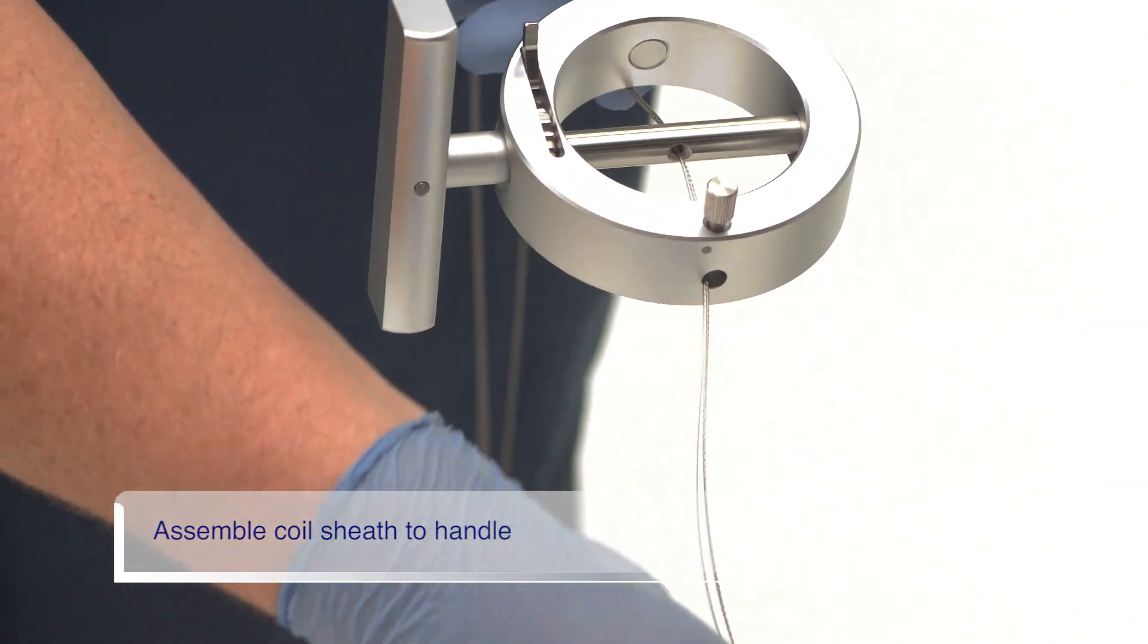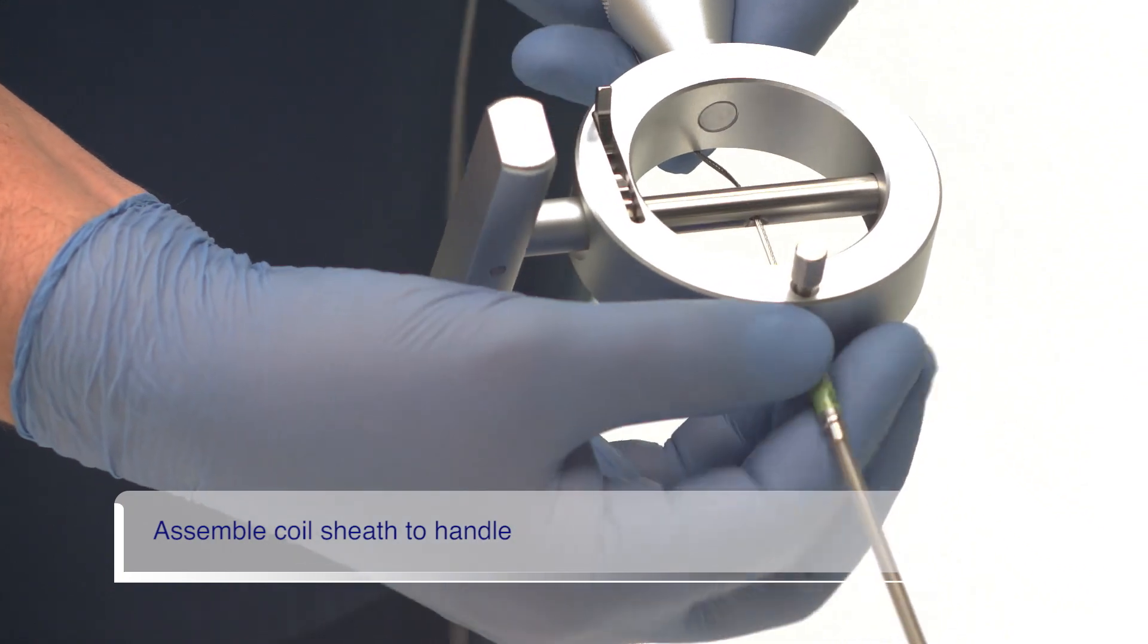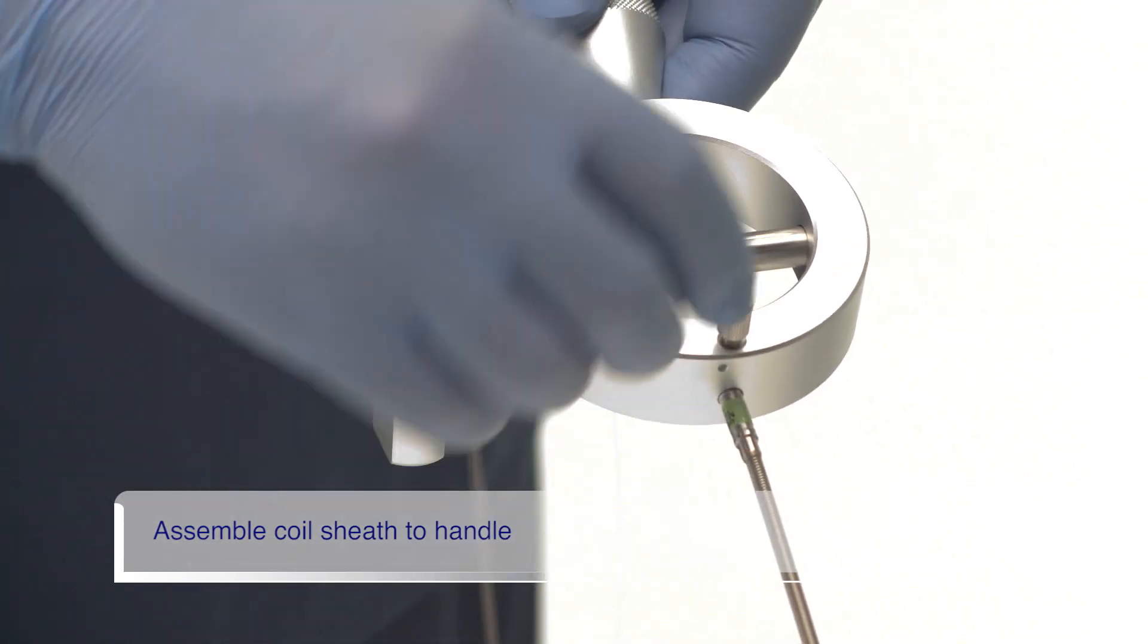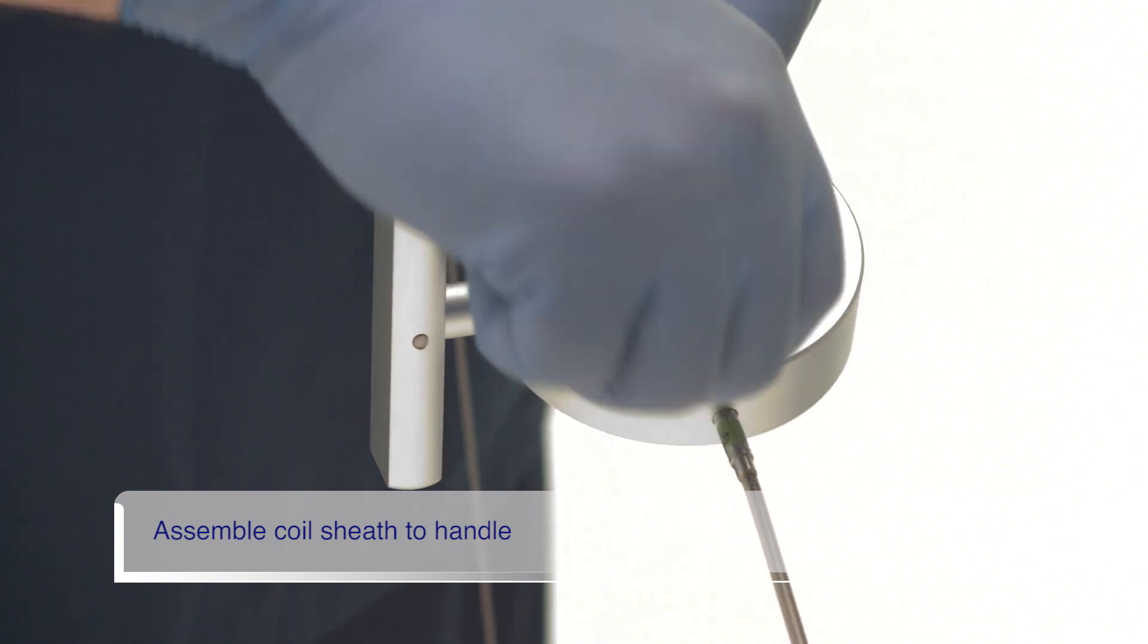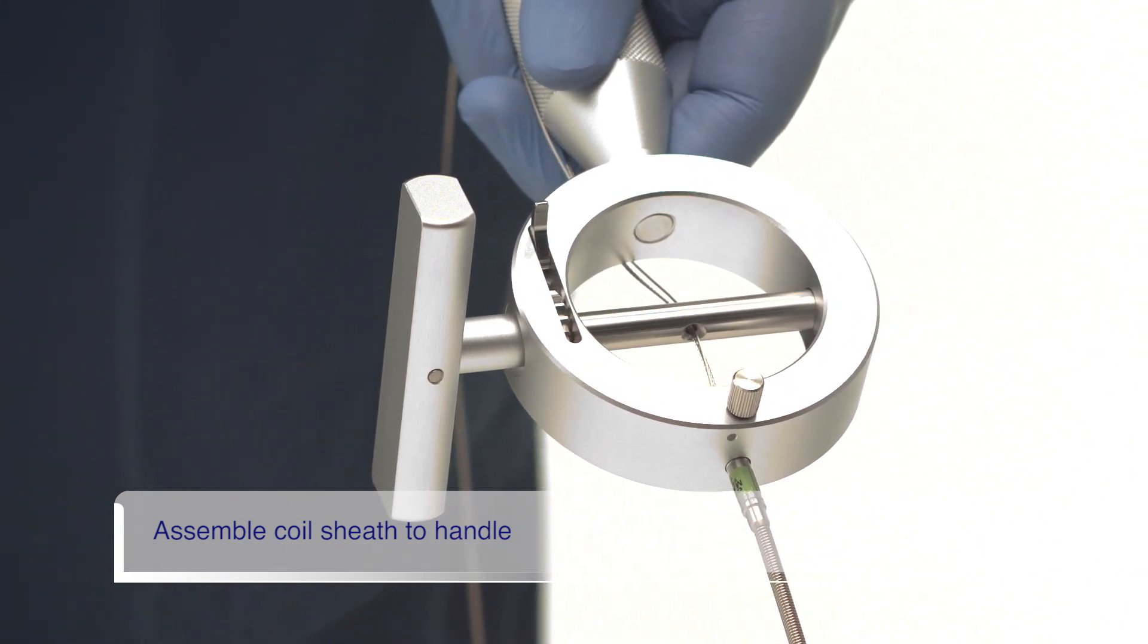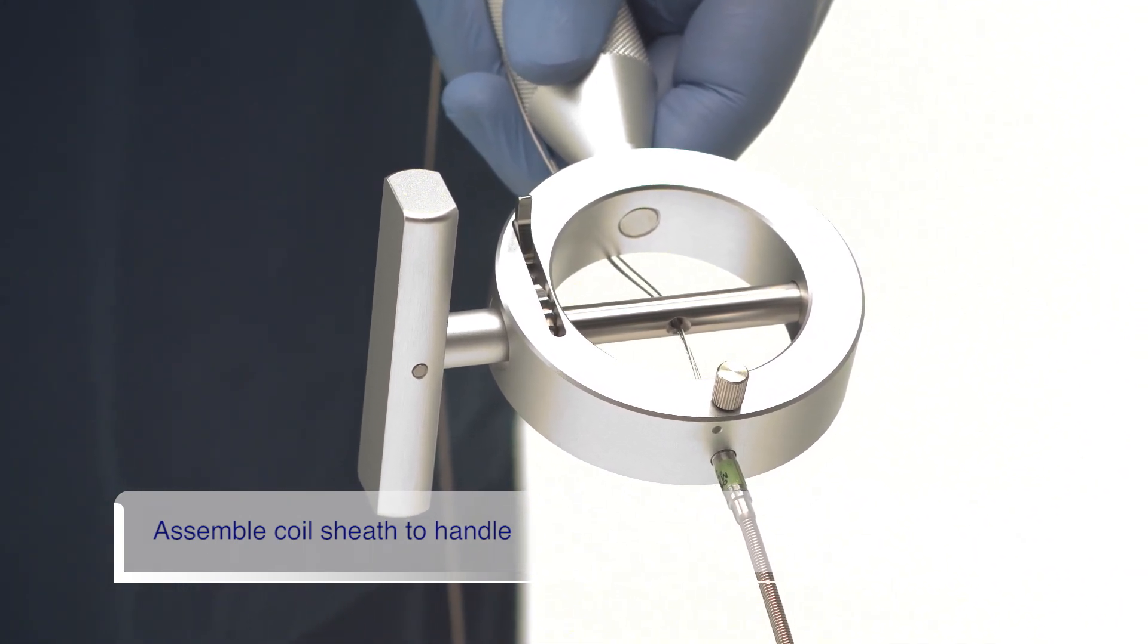Insert the green proximal end of the coil sheath into the hole at the top of the emergency lithotriptor handle. Lock the sheath in place by turning the thumbscrew clockwise as shown.